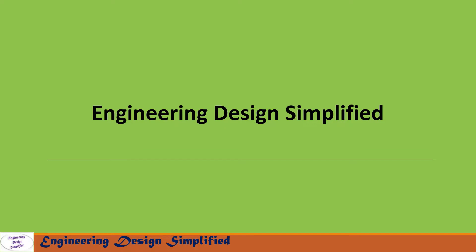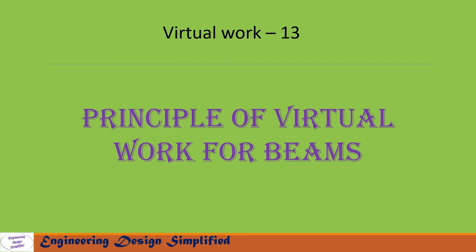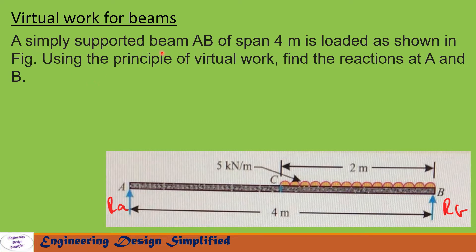Hello engineers, welcome back to Engineering Design Simplified. In this video series I will discuss the principle of virtual work applied for beams. Today's problem: a simply supported beam AB of span 4 meters is loaded as shown in figure. Using the principle of virtual work, find the reactions at A and B. A uniformly distributed load of 5 kilonewton per meter is applied from the midpoint of the beam to the right side B, so the loaded span is 2 meters.